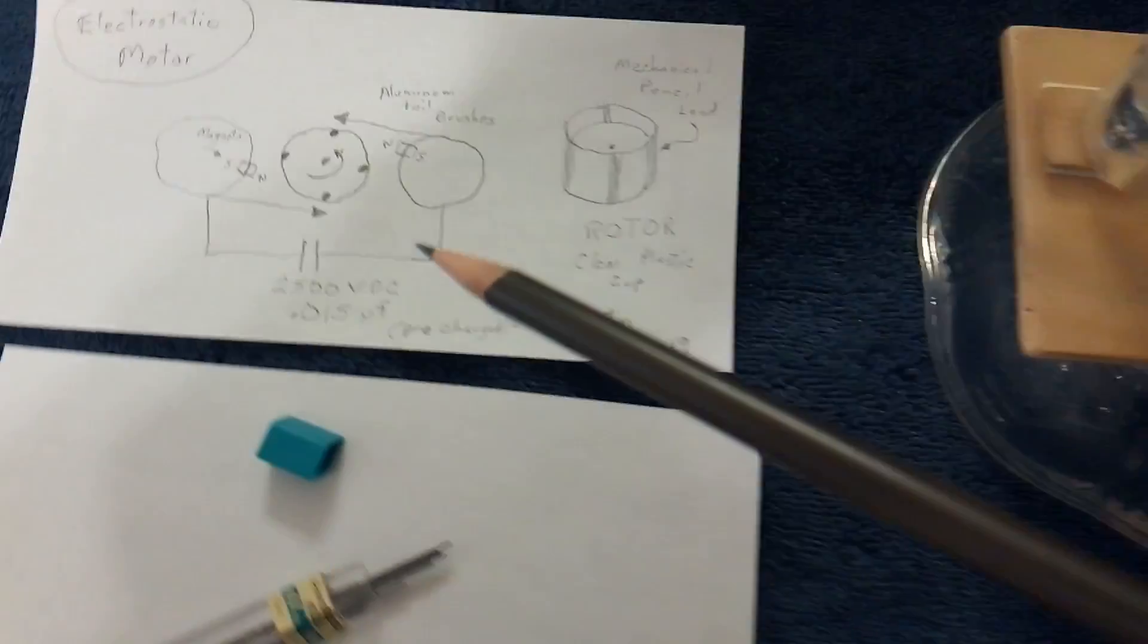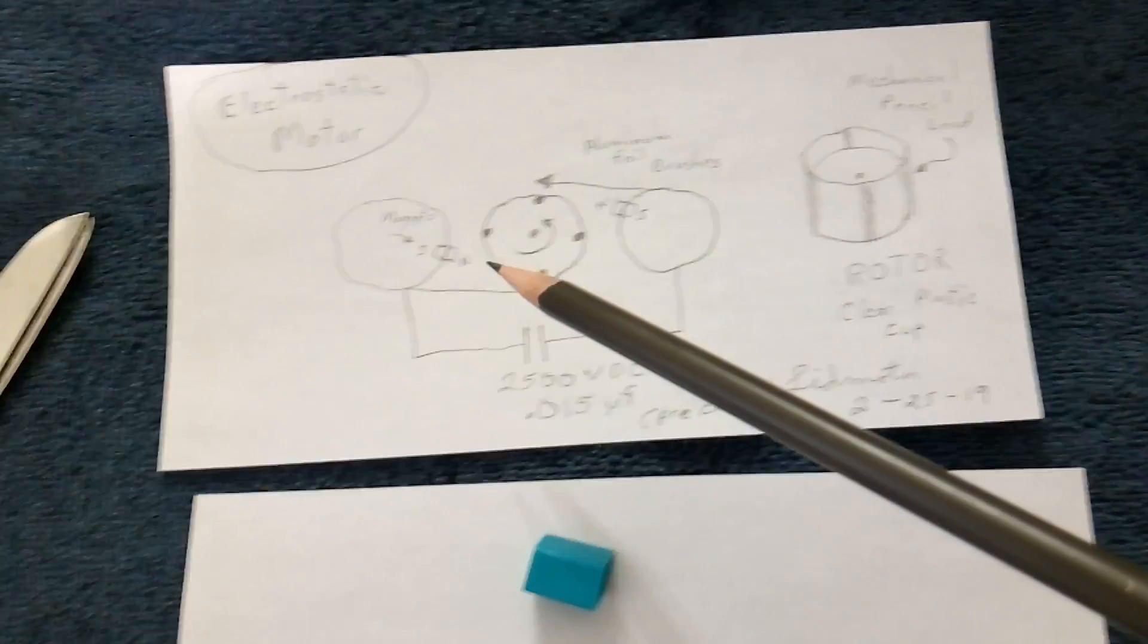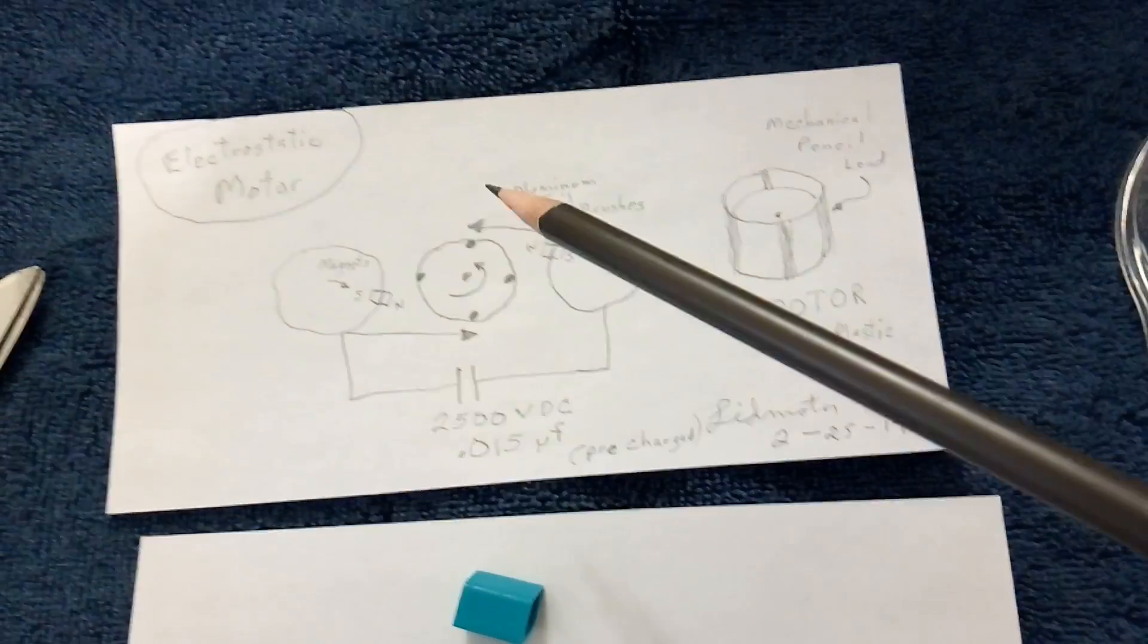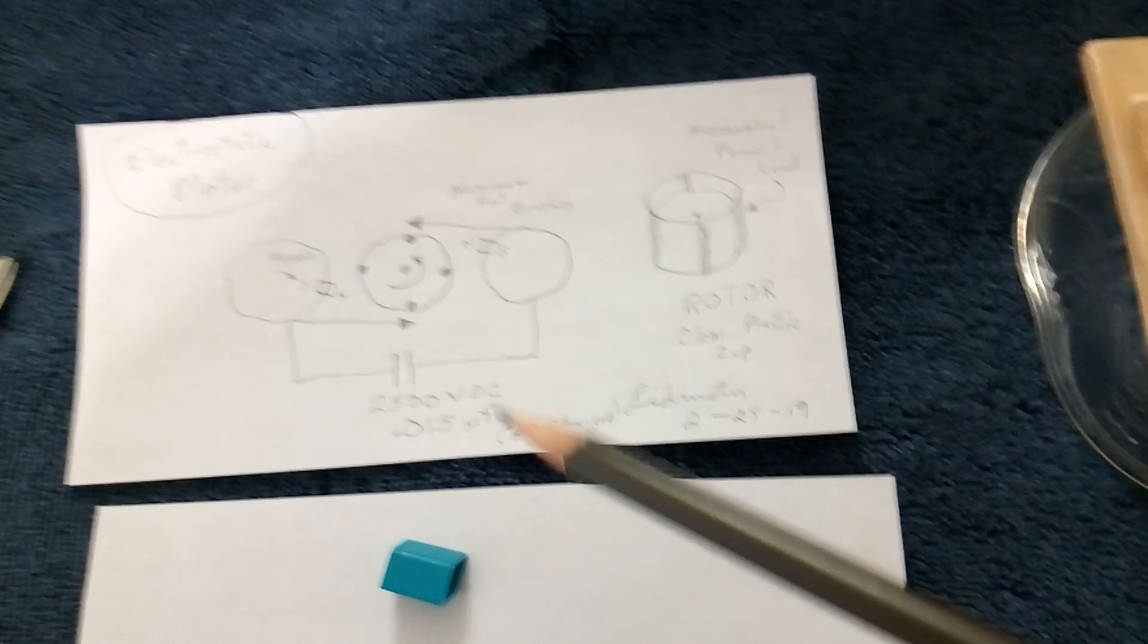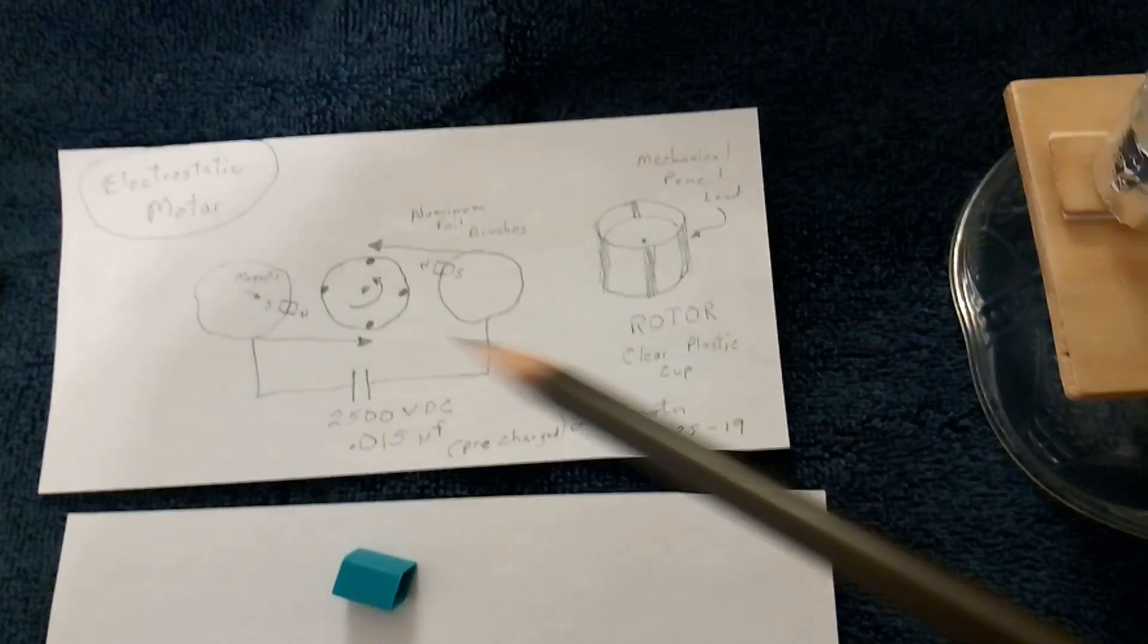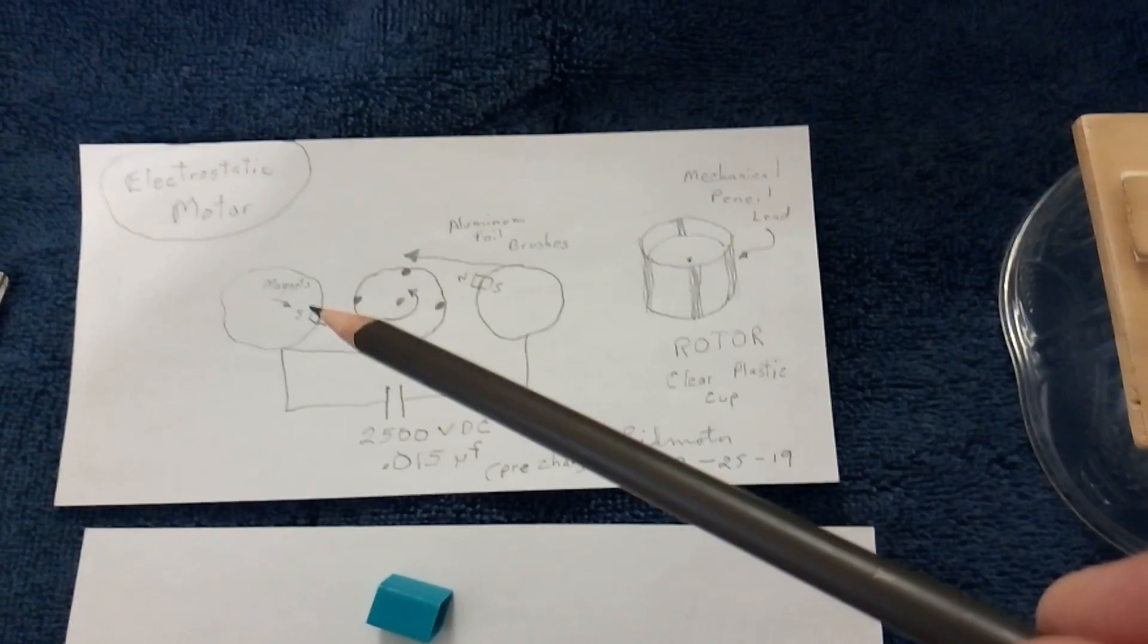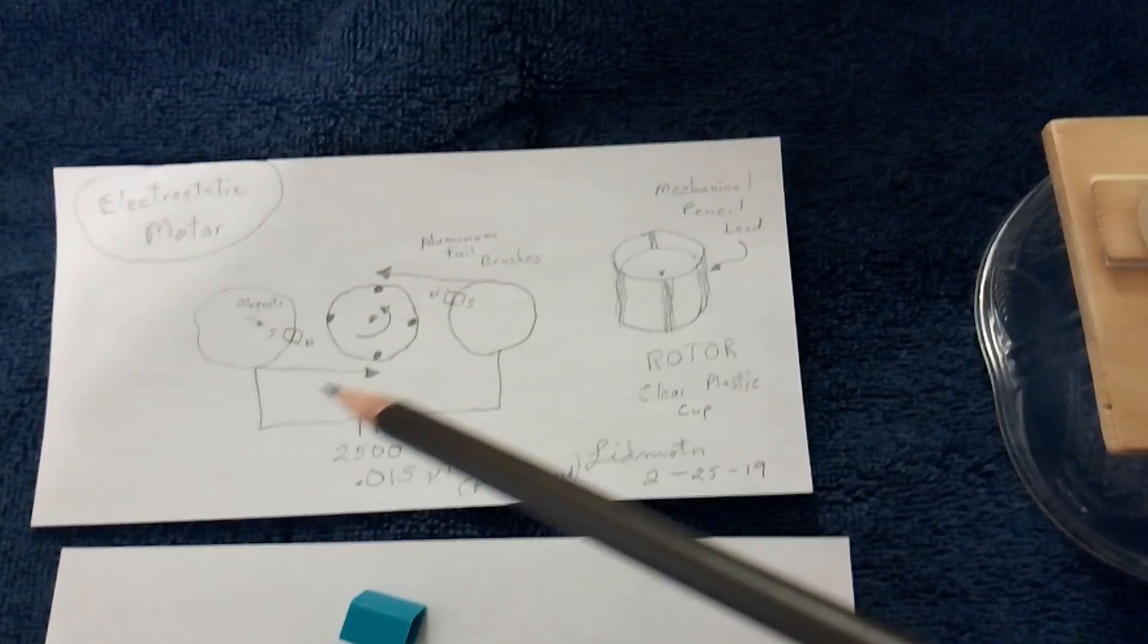The magnets are situated in such a way that they push on the graphite I believe when this is discharging and help push this around somehow, because it doesn't run longer than without the magnets. I had to have these magnets in that position there and I tried all different locations, and this is where it ran the best.